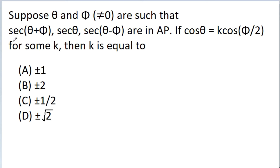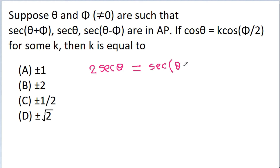We have given that sec(theta + phi), sec theta, and sec(theta - phi) are in AP. So we can get 2 times the median term: 2·sec theta is equal to sec(theta + phi) plus sec(theta - phi).